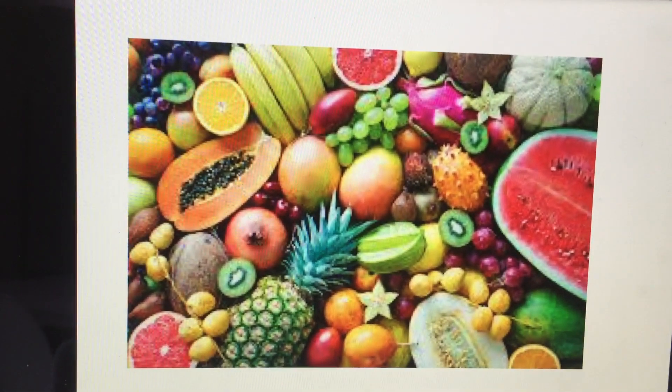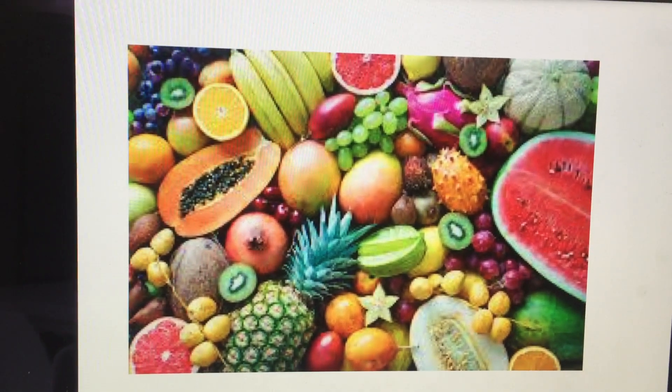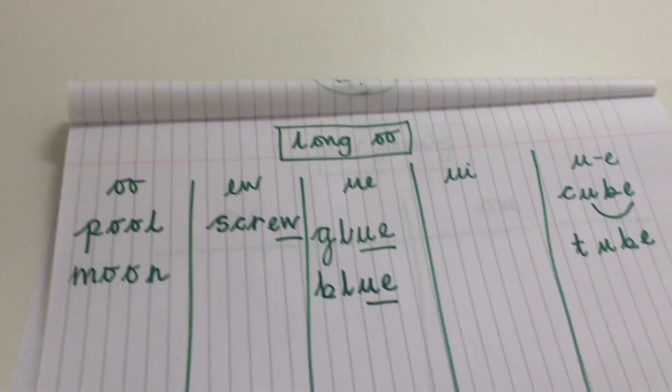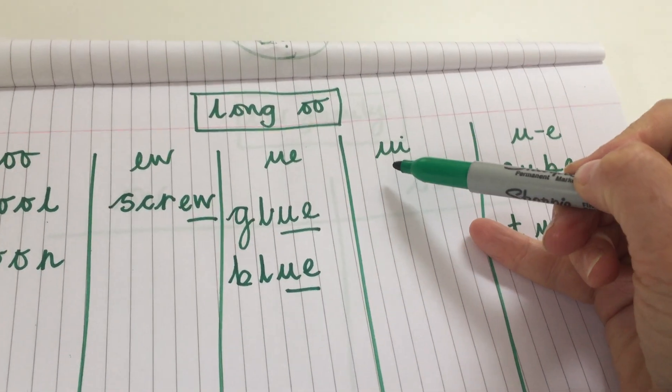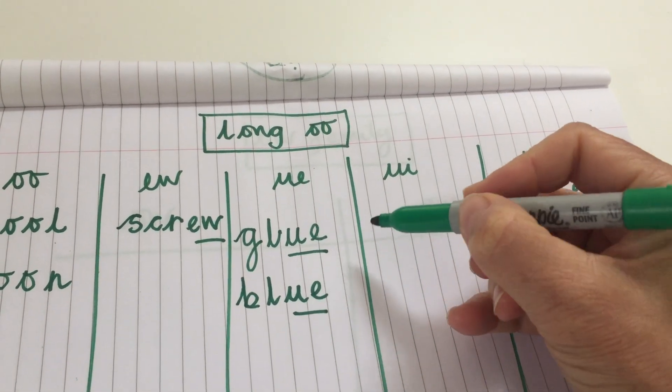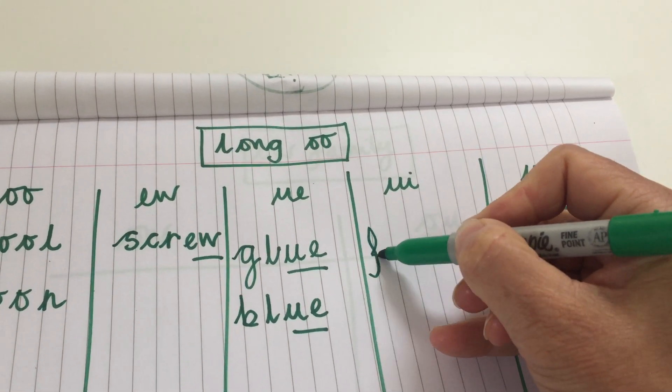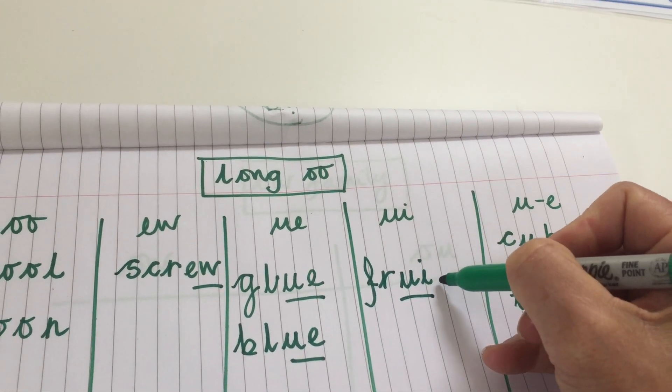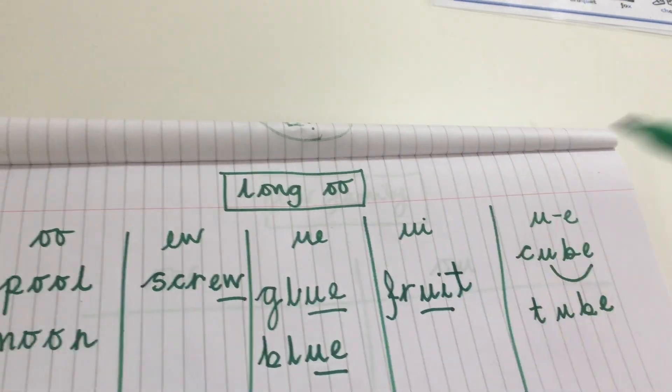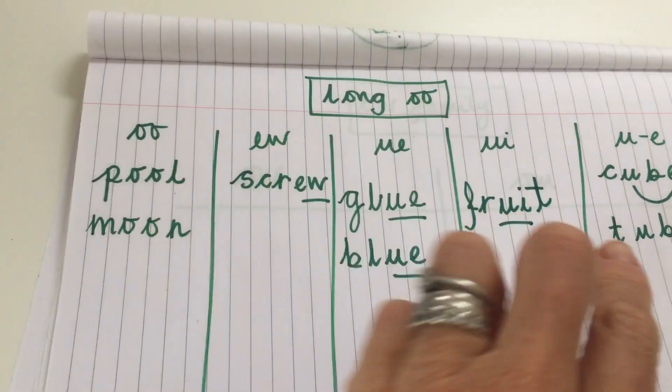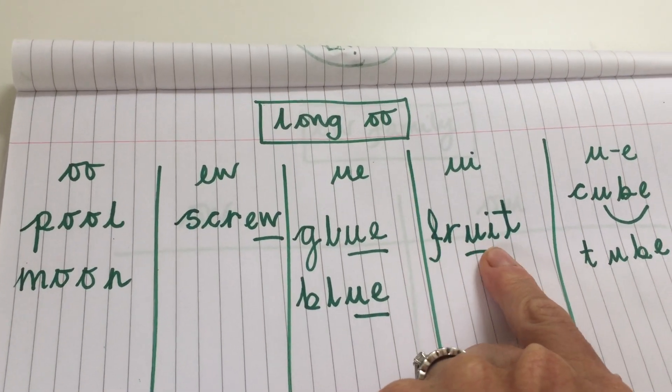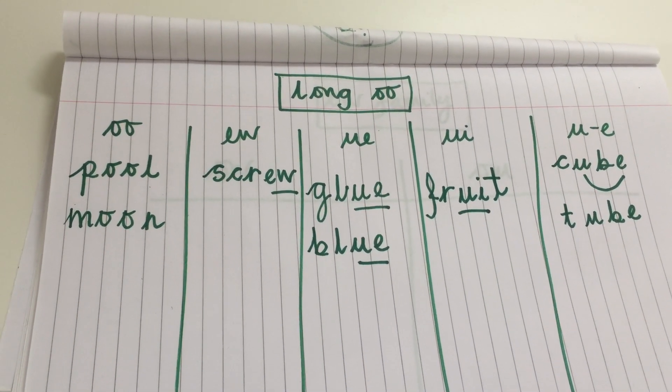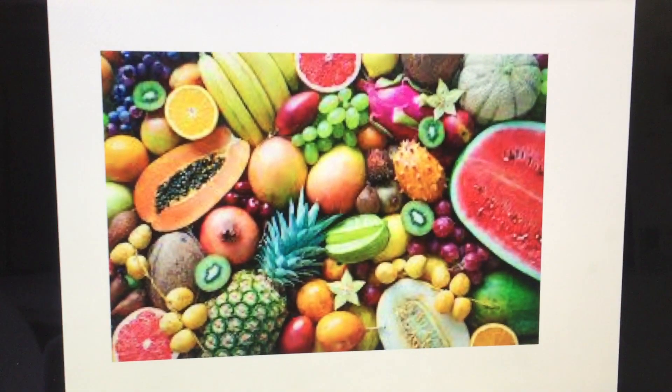Moving on to a whole collection of fruit. F, R, oo, T, fruit. And fruit is the U and the I. That's a tricky one. It's the U and the I. So it's the F, R, and then the U and the I together, making an oo. And then the last sound you hear is a T. Fr, oo, t. Fruit. That's very tricky. Well done if you got that one. And well done if you can spell that one. Fantastic.